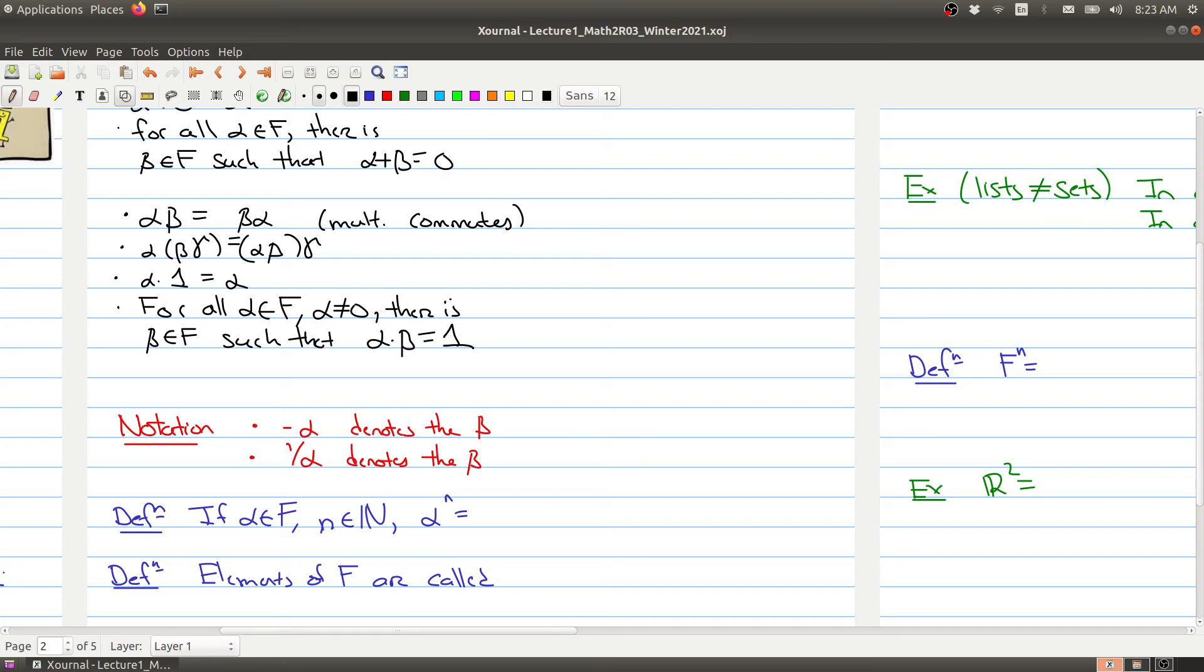And then for all alpha in F, alpha not equal to zero, there's a beta in F such that alpha times beta is equal to one. So given any element inside of the real numbers or complex numbers, we can find some element beta that allows us to multiply to one. It's called the inverse. And in fact I have that written right here: we're going to use minus alpha to denote the beta such that alpha plus negative alpha equals zero. So when I mean negative alpha, I mean this beta that allows me to answer this equation. And I use one over alpha to denote the beta such that alpha times one over alpha equals zero.